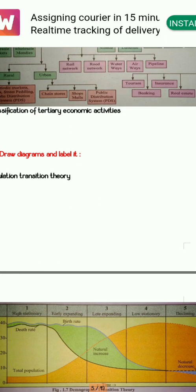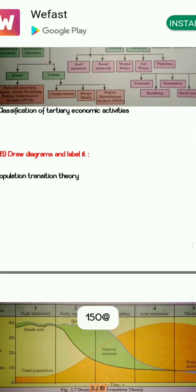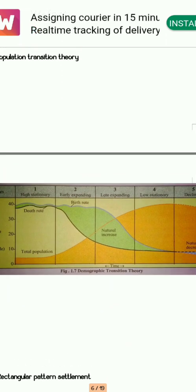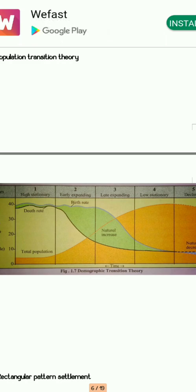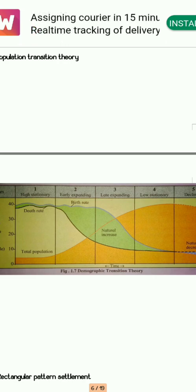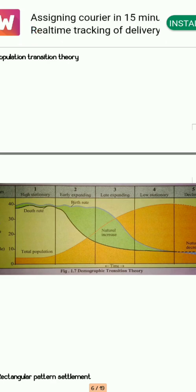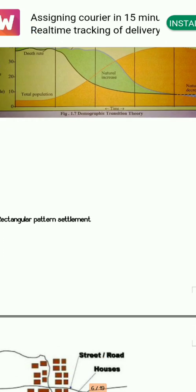Next is population transition theory. You need to learn this by heart — it is a very very important concept for your board examination. A diagram may definitely come from this topic, or it could be an eight-mark theory question, or give reasons or answer in brief. So study it very hard.